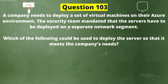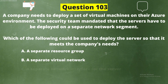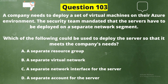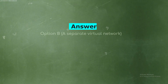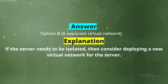Question 103. A company needs to deploy a set of virtual machines on their Azure environment. The security team mandated that the servers be deployed on a separate network segment. The correct answer is Option B: A separate virtual network. If the server needs to be isolated, consider deploying a new virtual network for the server.